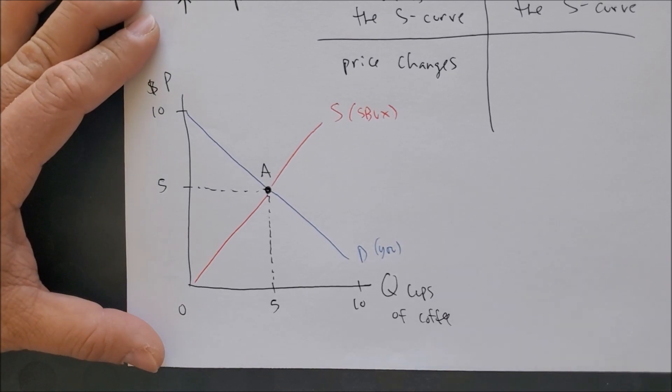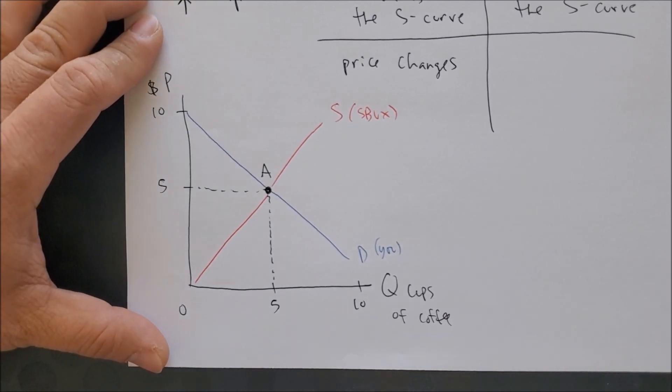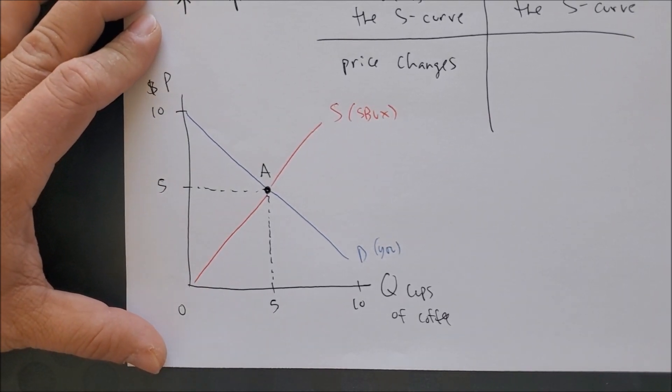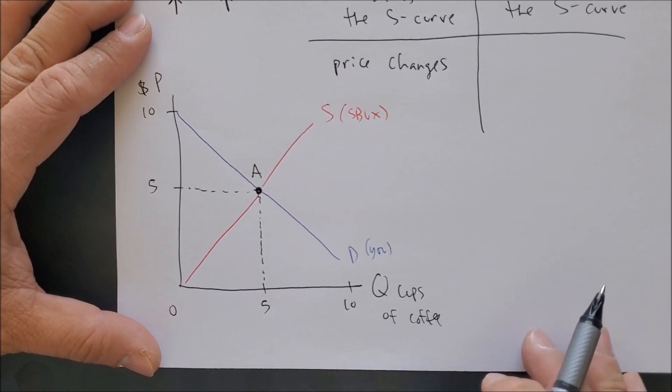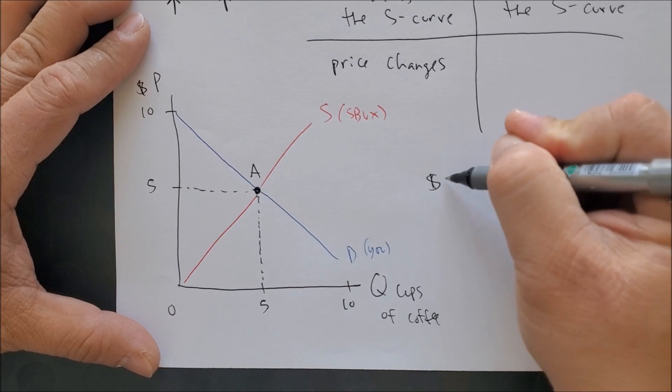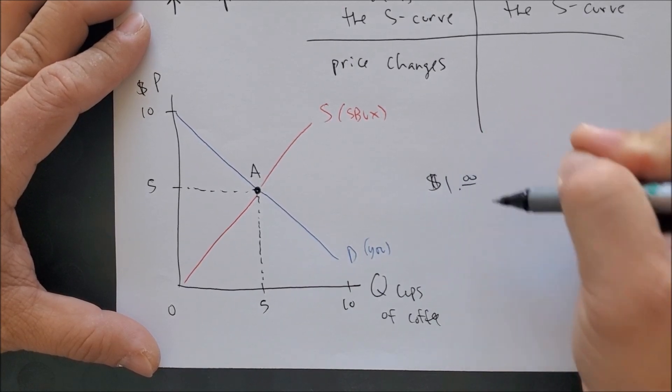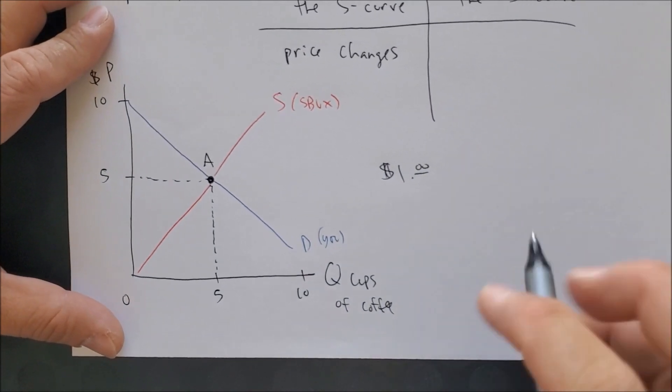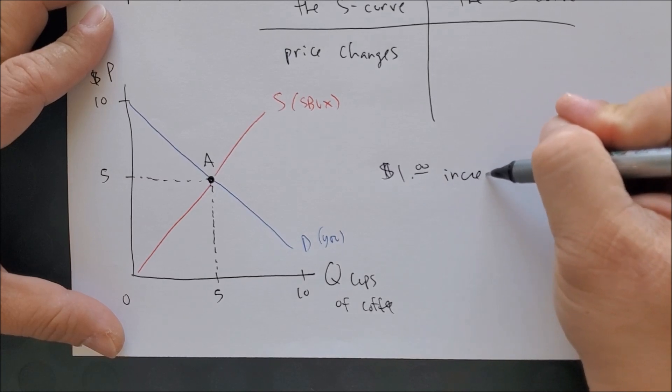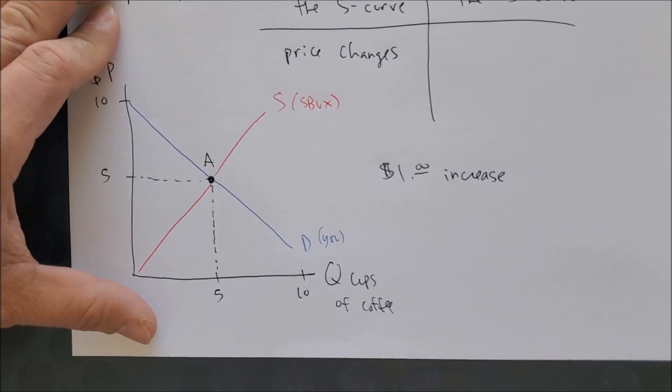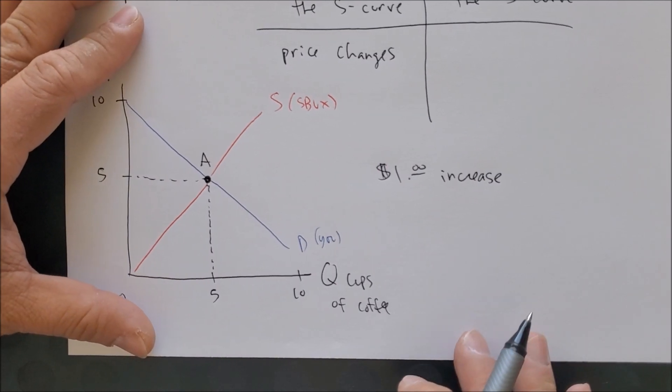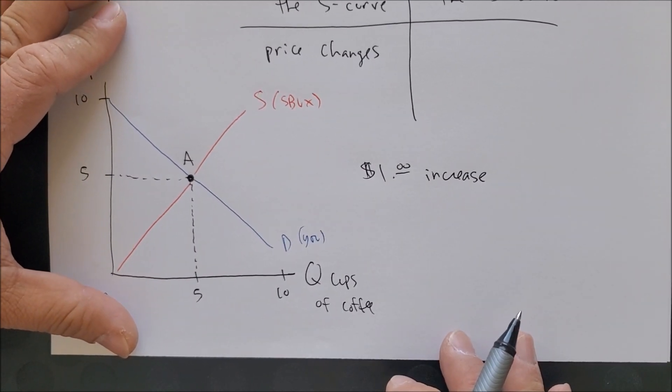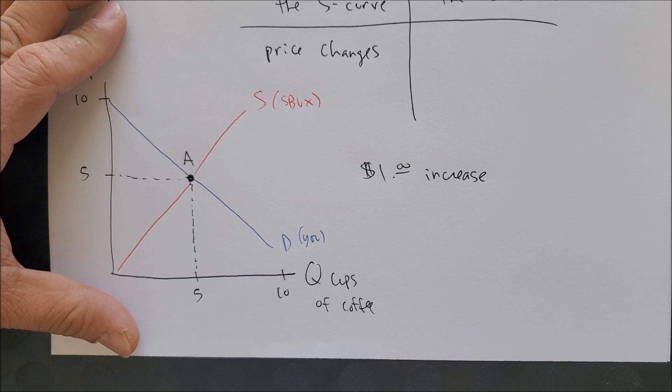If we focus on a price change, let's say that Starbucks wants to increase price - it's their prerogative, it's their store. Let's say a dollar increase in its coffee. For Starbucks owners and franchisee owners, they're thrilled - they would love to charge consumers more when they sell coffee.